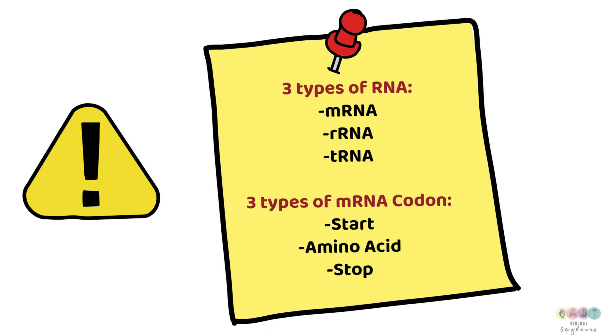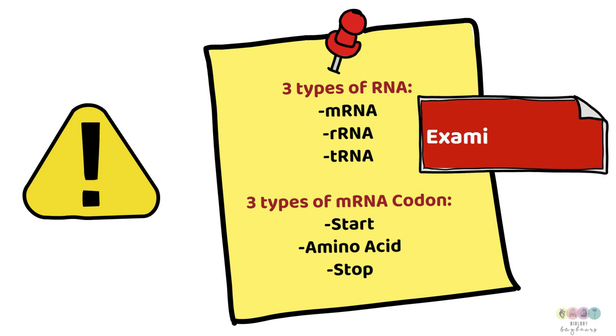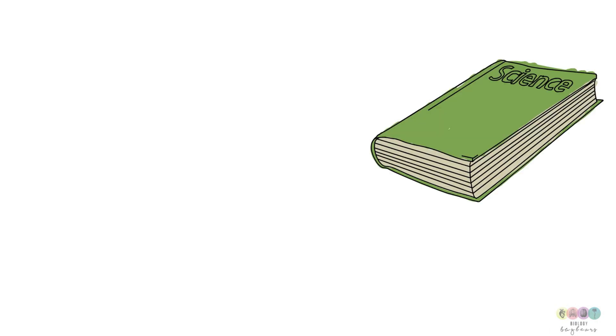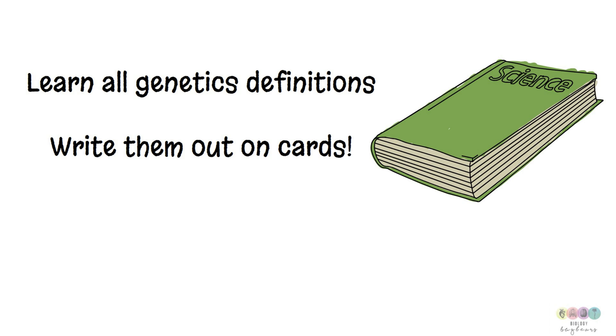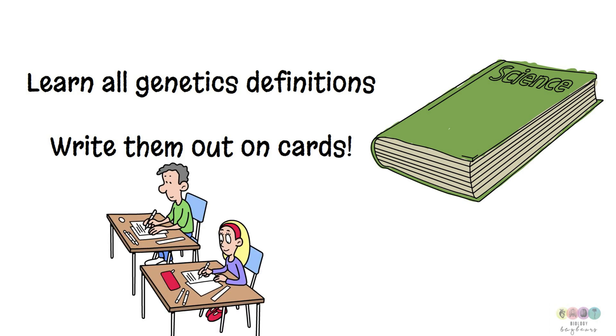Also know that the three types of RNA are examined frequently. Know them and also the three types of mRNA codon. Examined often, you'll meet them in the exam papers. There are lots of genetics definitions and you need to learn them. You need to write them out on cards and be very particular about the wording you use because the examiners will be. Good luck.